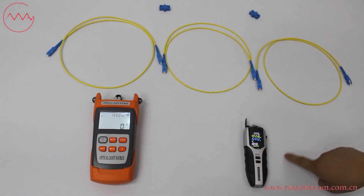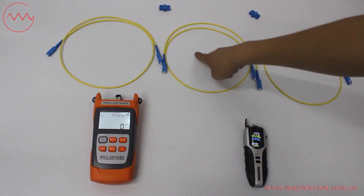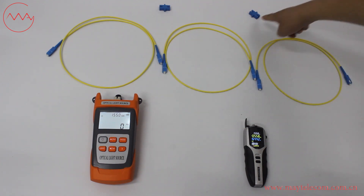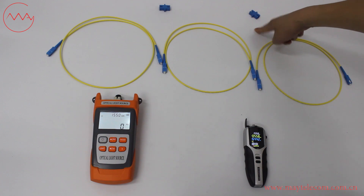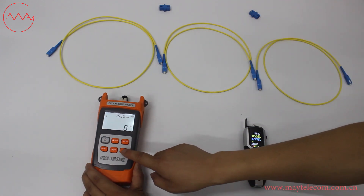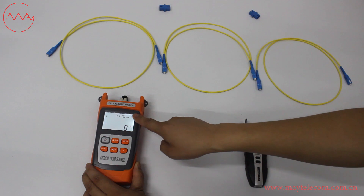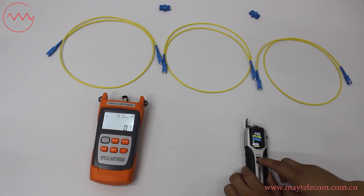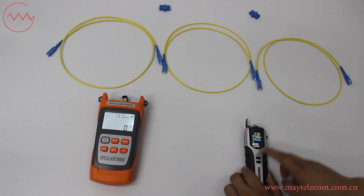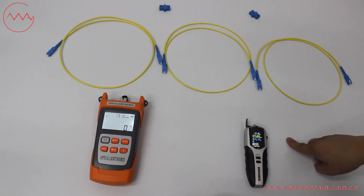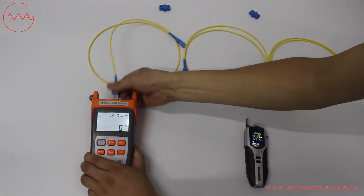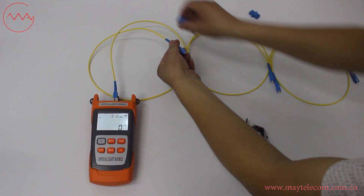This is the optical light source, optical power meter, and reference patch code. There are two reference patch codes. This is the patch code on test, and SC adapters. For the optical light source, press the wavelength button to select wavelength 1310. For the optical power meter, press the FM button to select the same wavelength 1310. Connect the reference patch code with the optical light source and optical power meter.